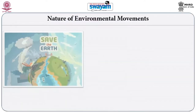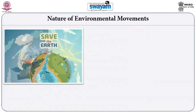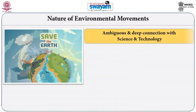One of the fundamental factors about environmental movements is their ambiguous and deep connection with science and technology. Science and technology play a crucial role in contemporary environmental movements.